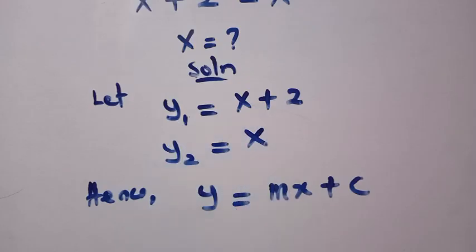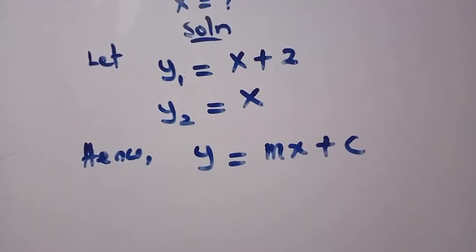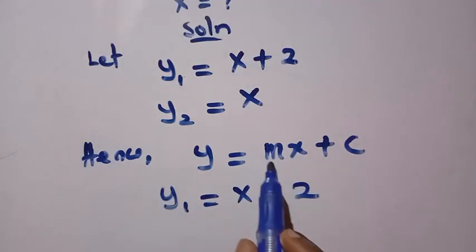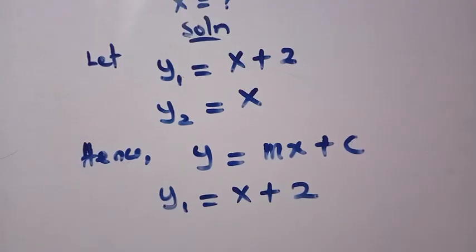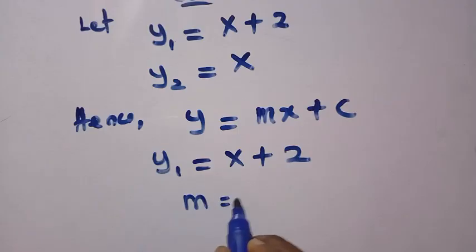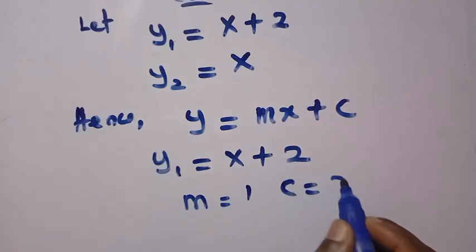So by trying to relate it with equation 1, comparing this equation 1 with this, y1 equals x plus 2. That is, the coefficient of this one becomes m. Therefore, in this first equation, we are going to have m here equals 1. And where we have c here equals 2, which is the slope.